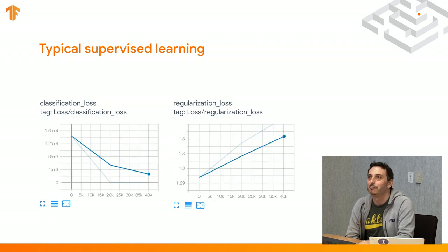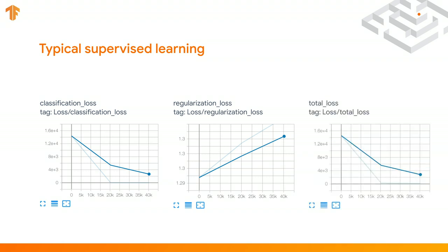This graph is probably not surprising to most people who have used supervised learning. You start training your model, your classification loss goes down, your regularization loss goes up because your weights are learning something. But overall your total loss is still a really good guide that your model is learning. If the loss doesn't go down, your model is not learning.